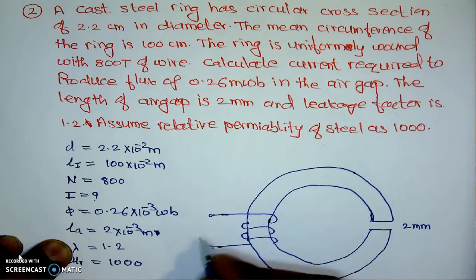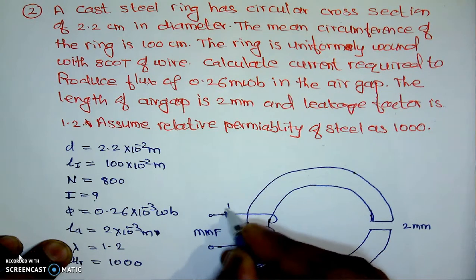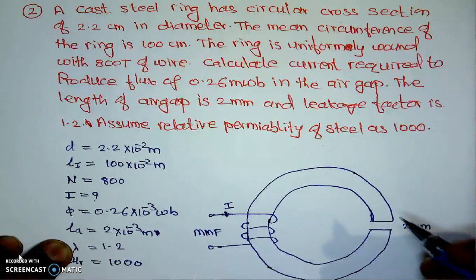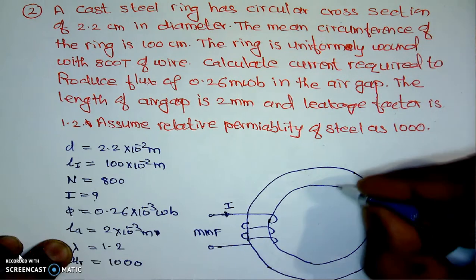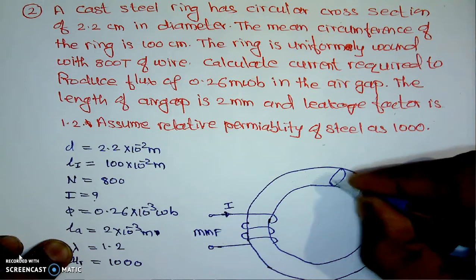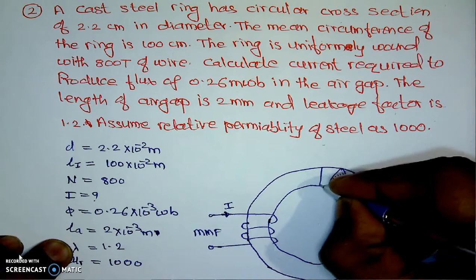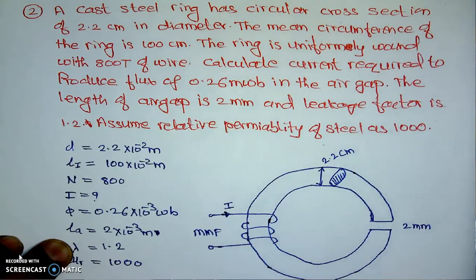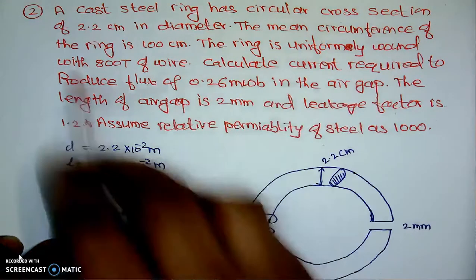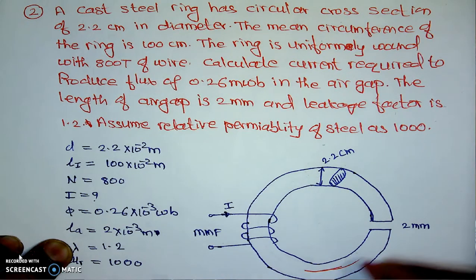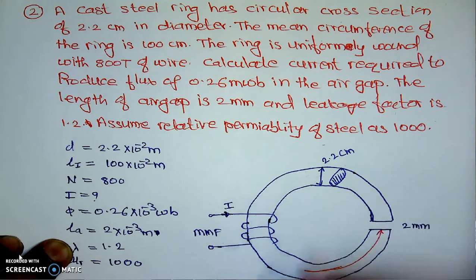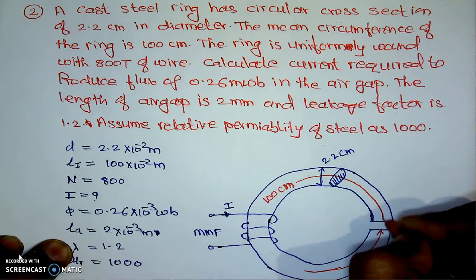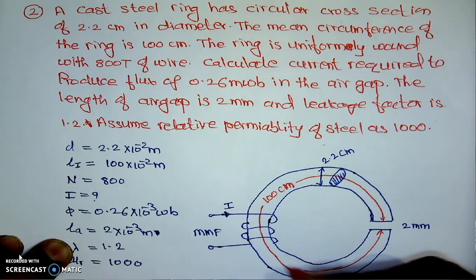We are interested in calculating the current I in the circuit, where the MMF will be applied. The diameter of the cross section is given as 2.2 cm. The mean circumference of the ring — that is this path — is given as 100 cm.